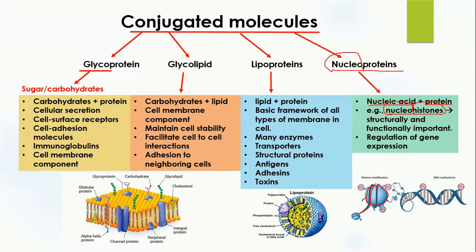It is just like having a ball with thread wrapped around it — the thread is the DNA and the ball is the histone protein. These nucleohistones are important structurally and functionally because they are involved in the formation of the stable structure of DNA and are also important in its replication and transcription. Along with this, nucleoproteins are also involved in the regulation of gene expression — determining which gene needs to be expressed and which gene needs to be suppressed.